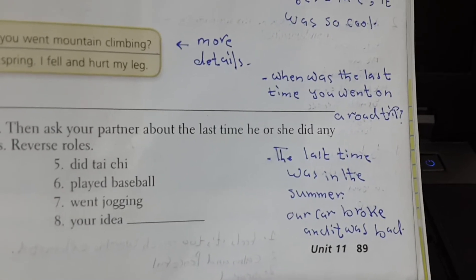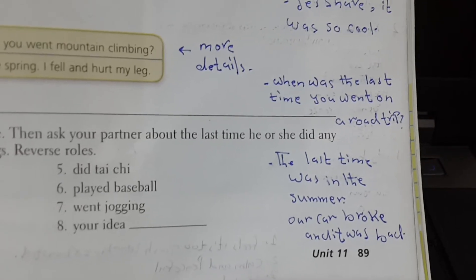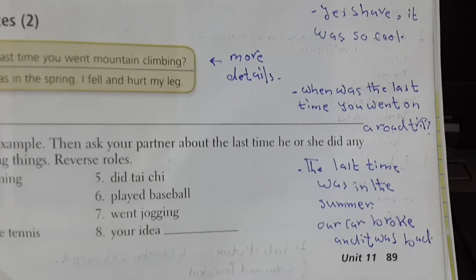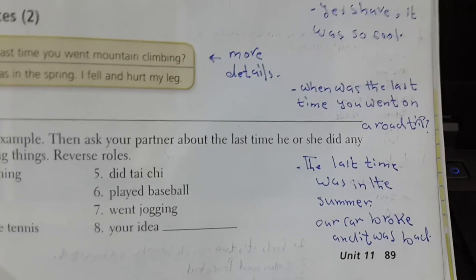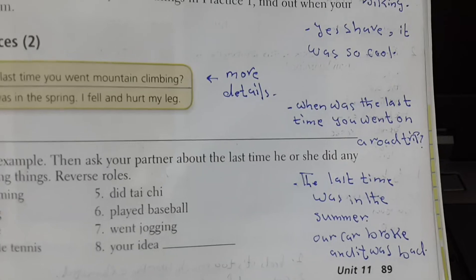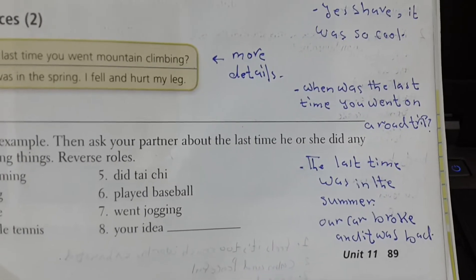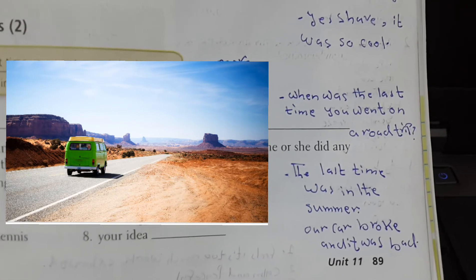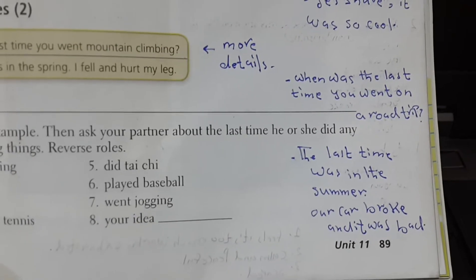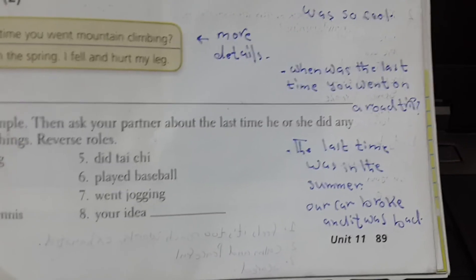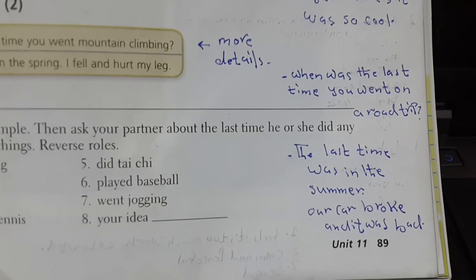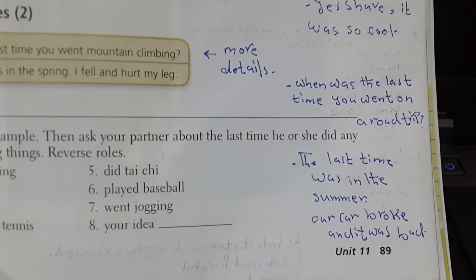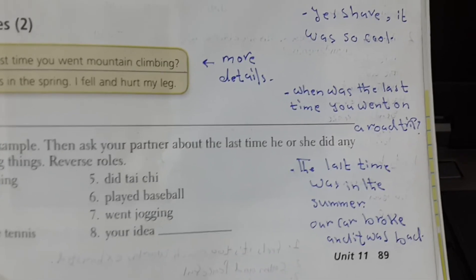Here is another example: 'When was the last time you went on a road trip?' We can use this construction for a variety of things, not just athletic experiences. The answer: 'The last time was in the summer. Our car broke and it was bad.' Notice the additional minute details that are added.